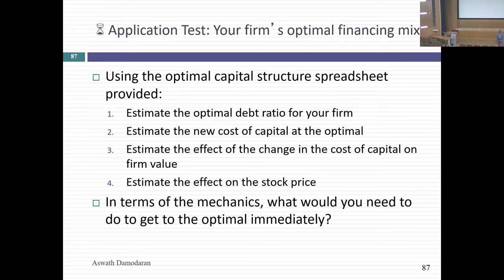Your current cost of capital is going to be computed — did everybody get Justin's point? In the spreadsheet, I compute the optimal rating at every debt ratio using the interest coverage ratio. So let's say you're at a 30% debt ratio: I compute the interest coverage ratio, come up with the rating, but if you have an actual rating it might not match up. Most of the time, is your rating higher or lower than the estimate? The spreadsheet is higher.